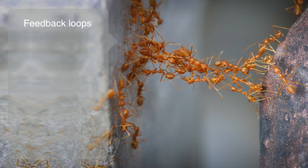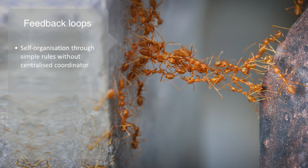Ant colonies are another often-cited example of self-organization through simple rules. Without a centralized coordinator, the colony as a whole exhibits quite sophisticated differentiation and specialization of its functional organs that then work together to maintain the whole system. Individual ants interact and communicate through exchanging chemical scents that induce other ants to do more or less of a given activity.